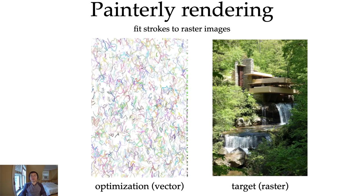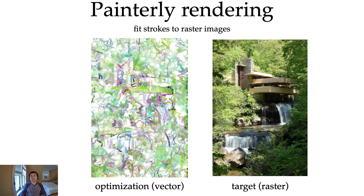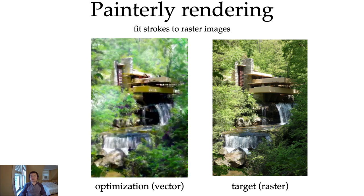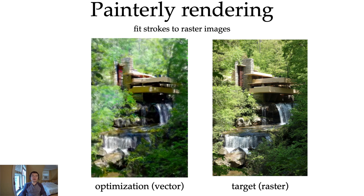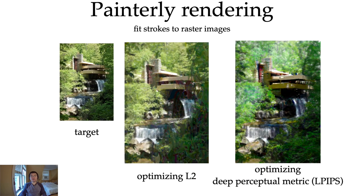Another cool application is that we can simulate what an image looks like if it is composed of many strokes. Given the target raster image, we start from some random distribution of strokes and then we optimize for the parameters. And this gives us a painterly looking because of the strokes. We can fit the strokes using different metrics. We found that L2 gives a more faithful look and the deep perceptual metric gives a more stylish look.